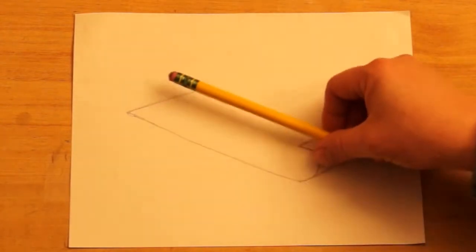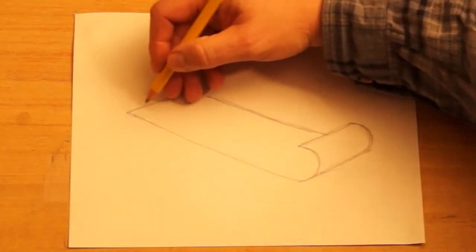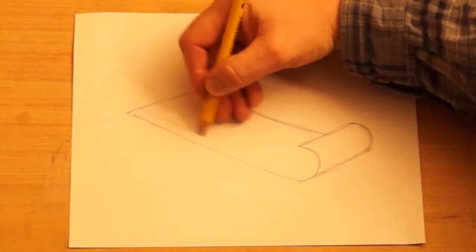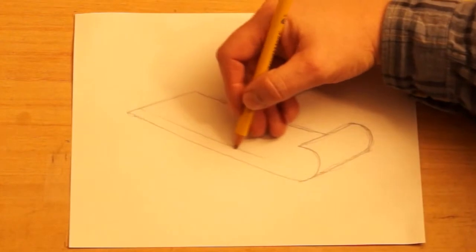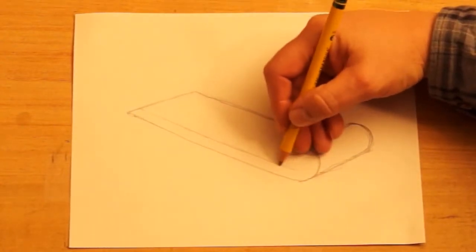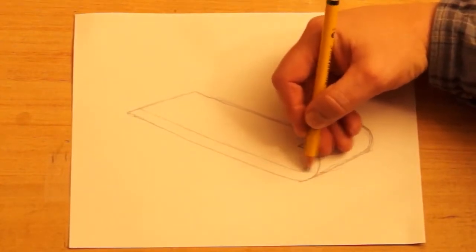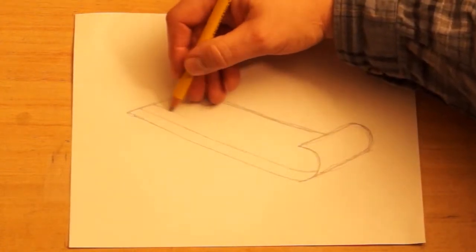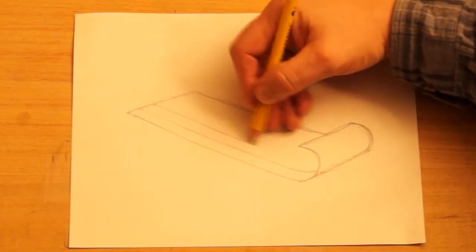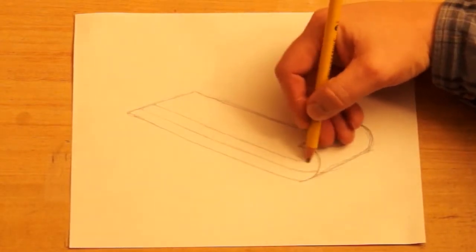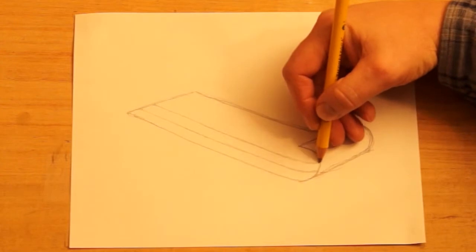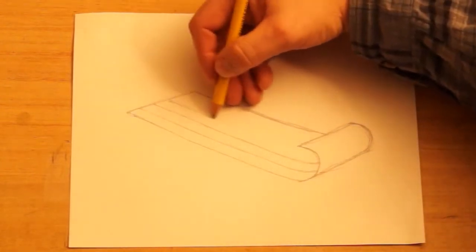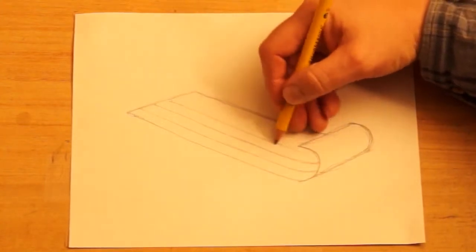So now I'm going to draw the individual planks that are beside each other. Here I just draw a line that's parallel to this outside line. The bottom is going to curve just slightly at the end. I'll draw another one next to that, and I'm trying to make these the same width. I'm not actually measuring them, I'm just kind of looking at them and visually trying to make them about the same width.